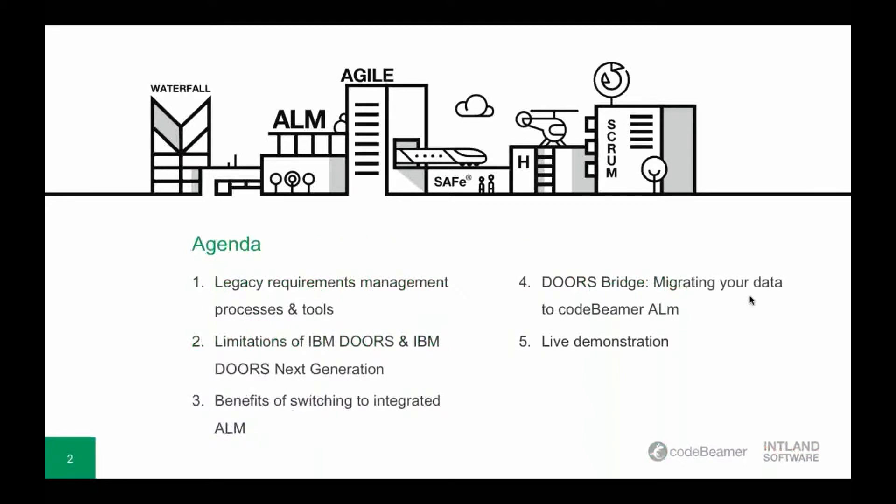This is what I'm going to be talking about: first, legacy requirements management process and tools, and requirements management in embedded software. Then the second topic is going to be the limitations of IBM Doors and IBM Doors Next Generation. Finally, benefits of switching to integrated ALM and Doors Bridge — specifically how you can migrate your data to Codebeamer ALM — which will then be followed by a live demonstration of our Doors native bridge.